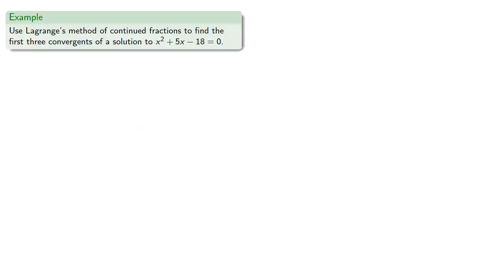Let's use Lagrange's method to find the first three convergents of a solution to x squared plus 5x minus 18 equals 0. We can evaluate our polynomial at 1, 2, 3, and so on, which gives us...